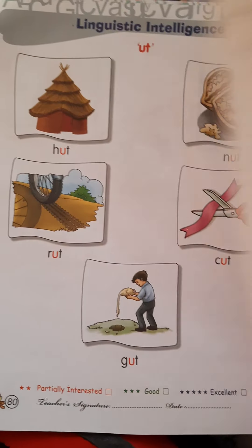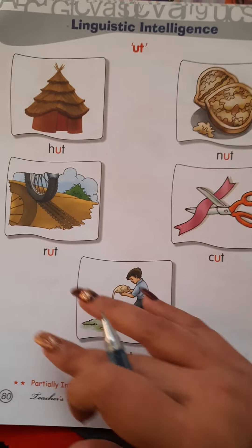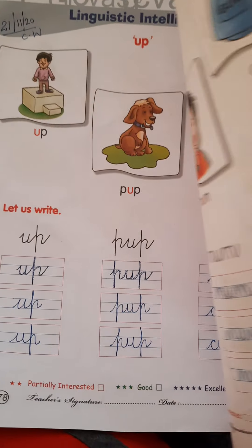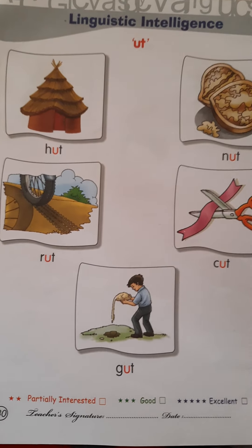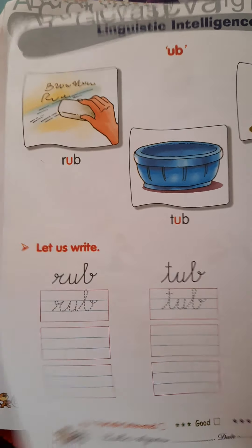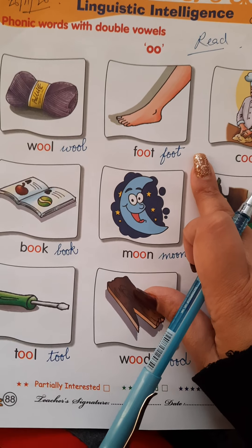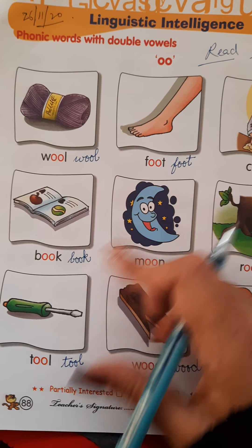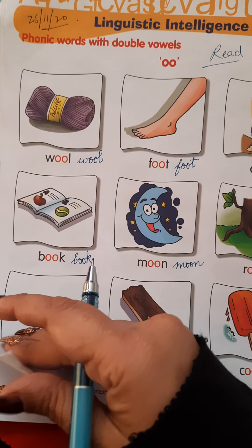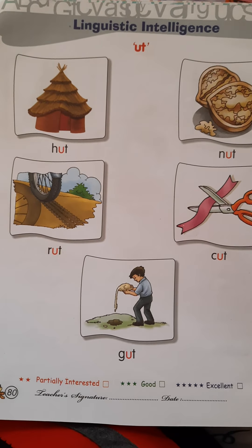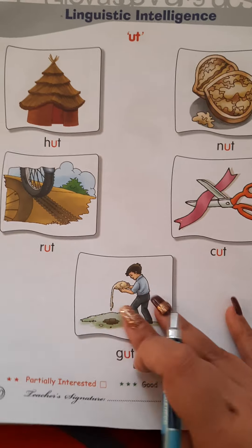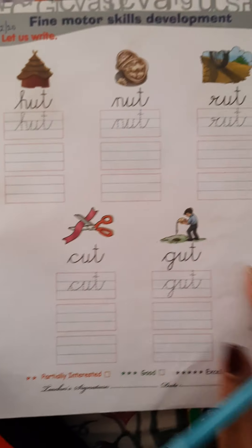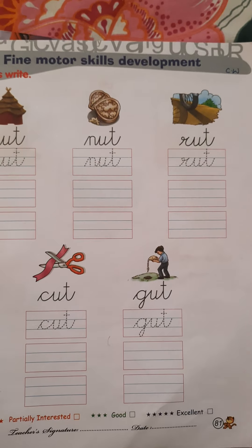These are U vowel words — they are now complete. We have now started double O words. These you have done before. First let's do the book work, then we will do double O words. Page number 81.